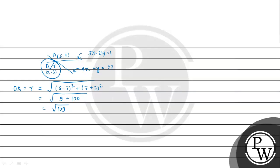Now applying the center form equation of the circle: (x minus h) whole square plus (y minus k) whole square equals r square. Here h equals 2, k equals minus 3, and r equals square root of 109. So the equation of circle C1 is (x minus 2) whole square plus (y minus (minus 3)) whole square equals (square root of 109) square, which simplifies to (x minus 2) whole square plus (y plus 3) whole square equals 109.